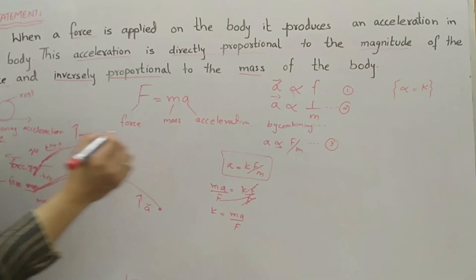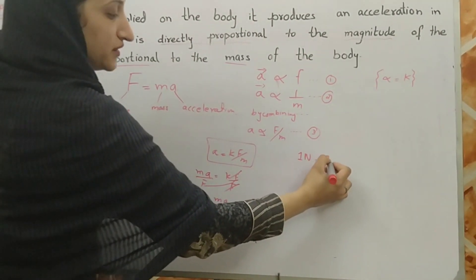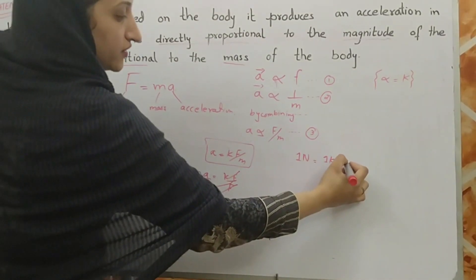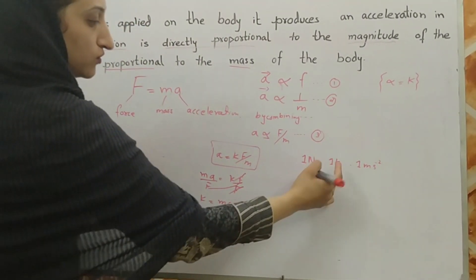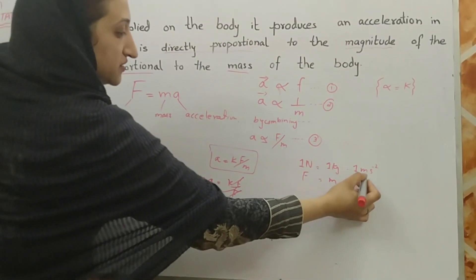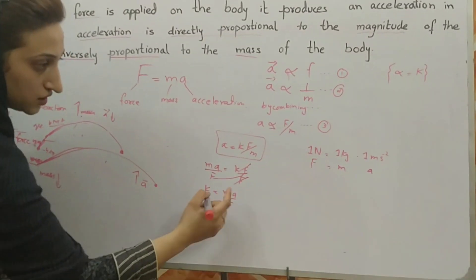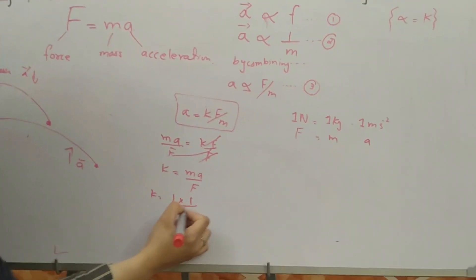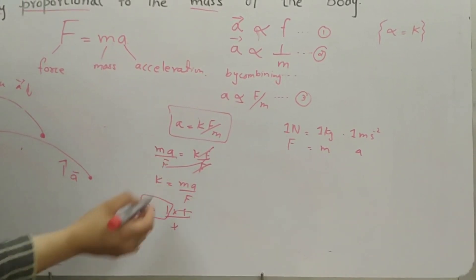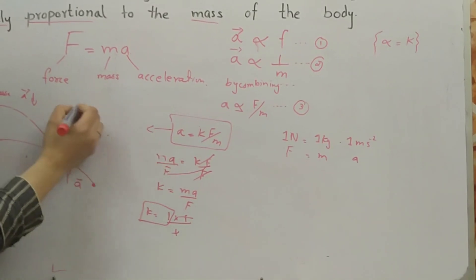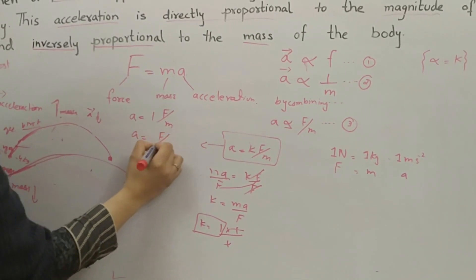From Newton's definition, we know that if a force of 1 Newton is applied on a mass of 1 kg, it produces an acceleration of 1 meter per second squared. So putting in the values: k equals 1 kg times 1 m/s² divided by 1 Newton, which gives k equal to 1. Substituting back, we get a equals f over m.